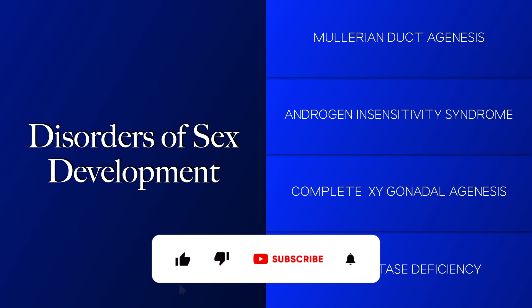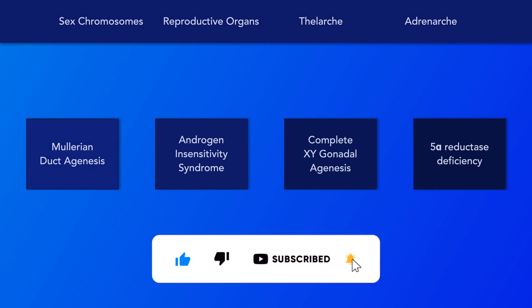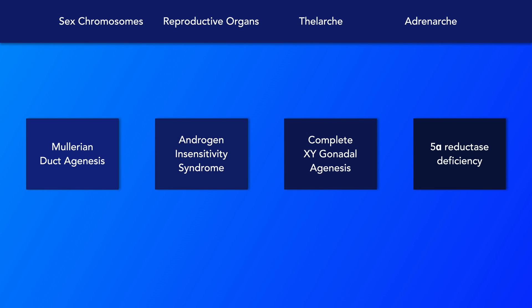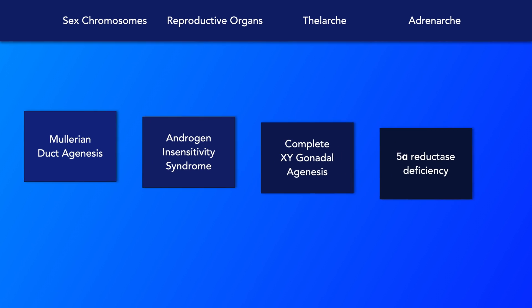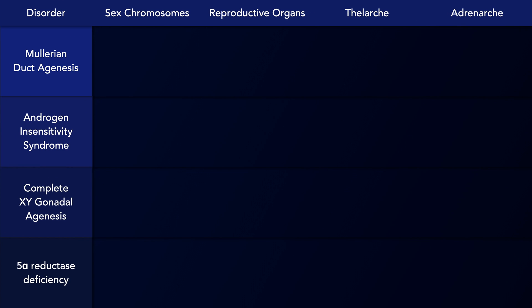This brief video will compare four disorders of sex development. These conditions will be distinguished based on sex chromosomes, reproductive organs, thelarche, and adrenarche. There are other disorders of sexual development, but they will not be discussed here.